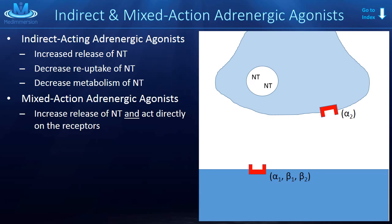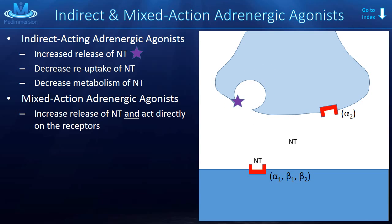So we've explained what the direct acting adrenergic agonists do. Let's now talk about what the indirect and mixed action adrenergic agonists do. We know that neurotransmitter is released from the vesicles and binds the receptors, and we know that direct acting adrenergic agonists also directly bind the receptors. One way indirect acting agents work is to increase the release of neurotransmitter. Take this purple star — it binds to the membrane and causes more neurotransmitter to spill out. So the receptor is stimulated, but the drug didn't directly stimulate it.